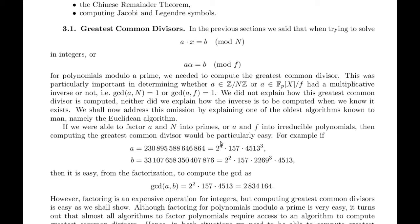Notice this is 2 squared and 2 to the 4th has 2 squared in it. 157, you see 157 in both of these. 4513, see there's 4513 and there's 3 of them here, right? So one of them is in common, and then they multiply 2 squared times 157 times 4513 to get the greatest common divisor as being 2,834,164.